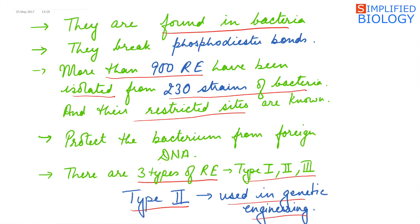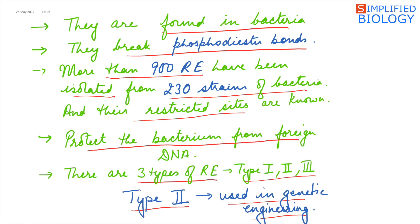Restriction endonucleases break the phosphodiester bonds that hold adjacent nucleotides together in a polynucleotide chain. Their function in the bacterium is to protect it from foreign DNA. When the bacterium is infected by viral DNA, they cut the viral DNA into pieces so that it cannot act upon the bacterium.